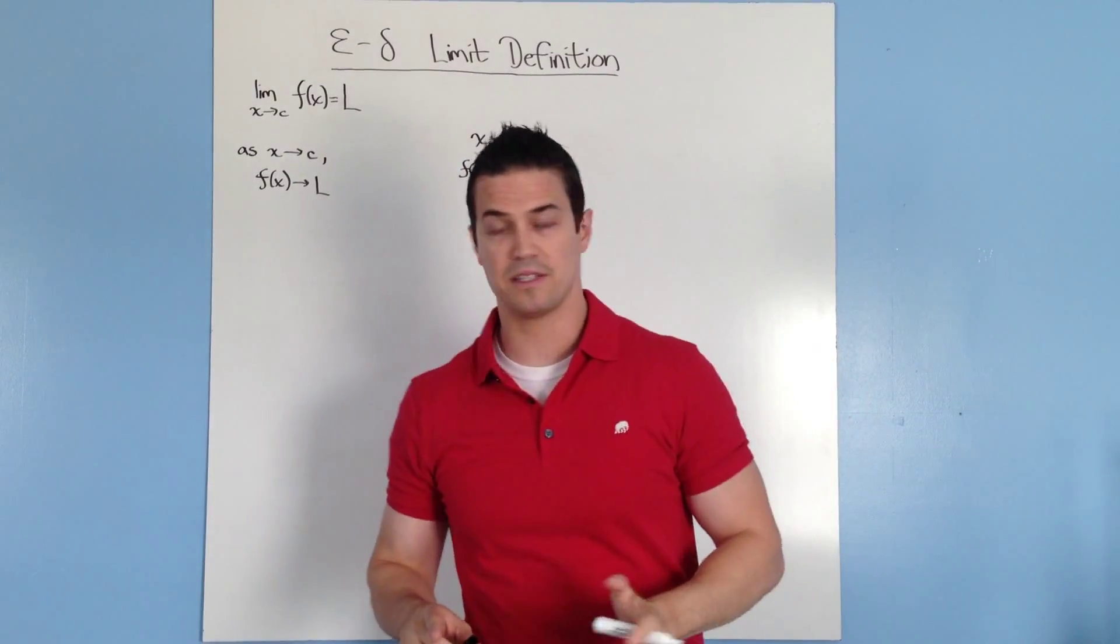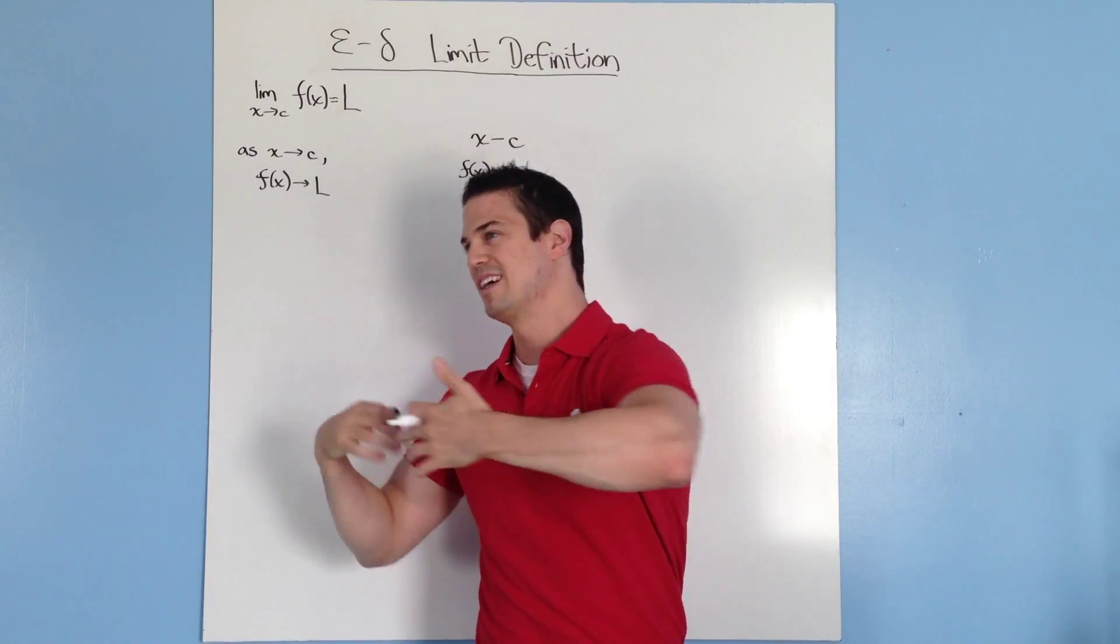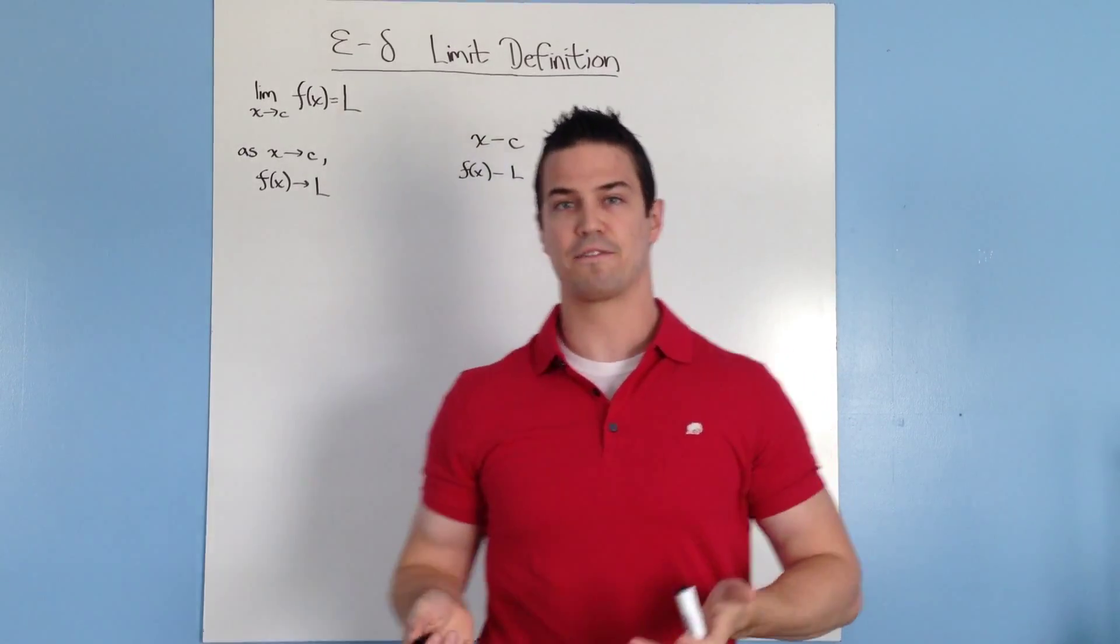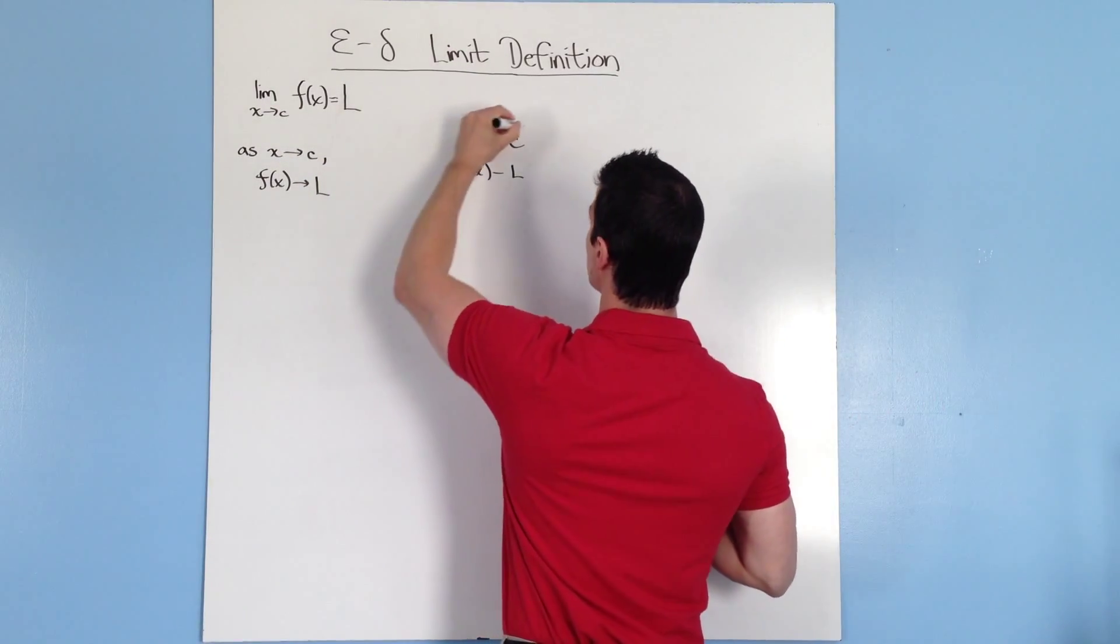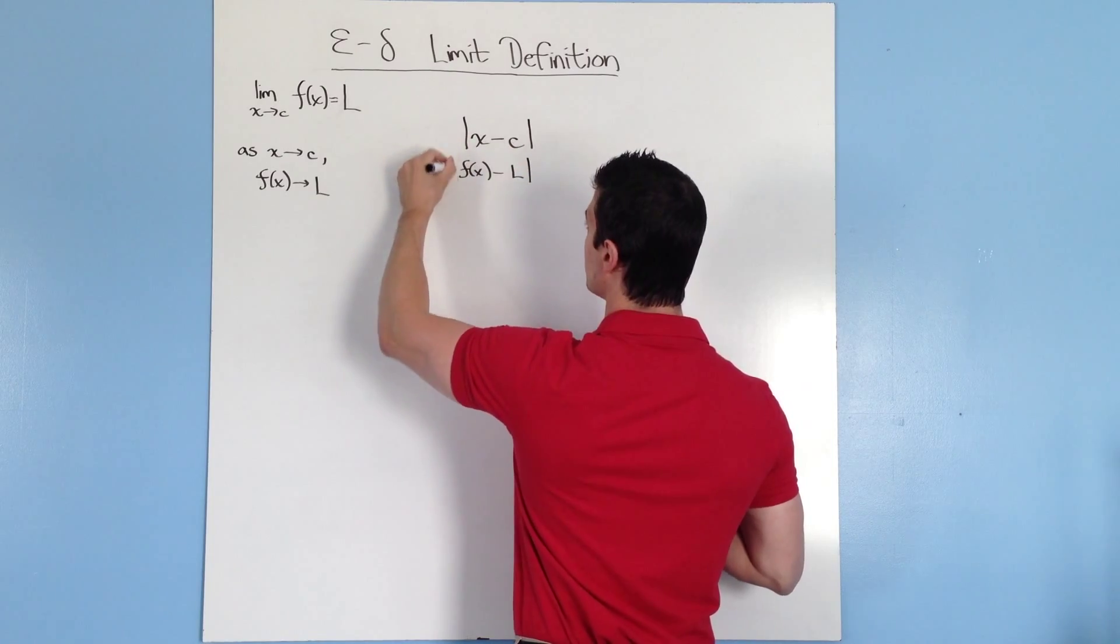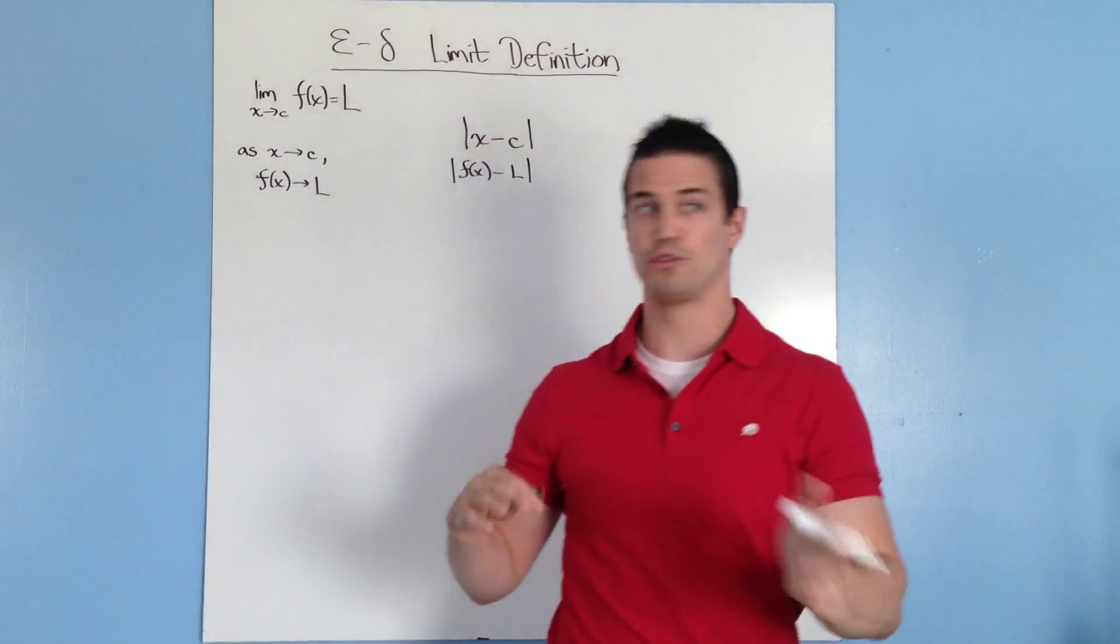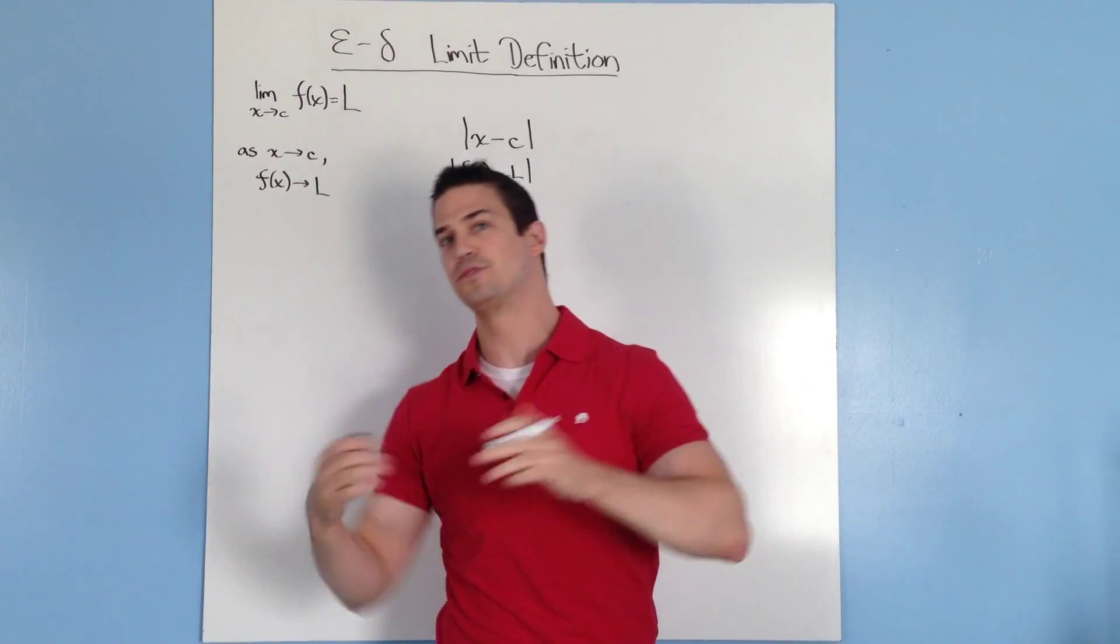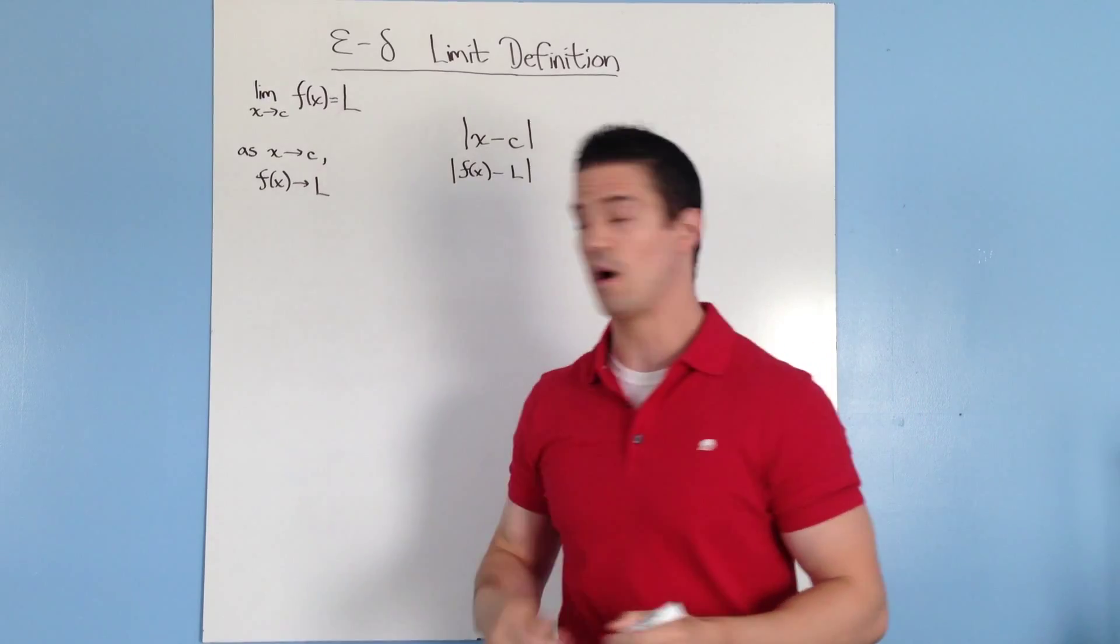The one issue with this is if the x is smaller than the c, then you're going to have a negative closeness, which technically you can use, but it's easier just to make them all positive. So I'm just going to use absolute value brackets to show that the closeness is always going to be positive. You can do negative, but it's just easier to do it this way.